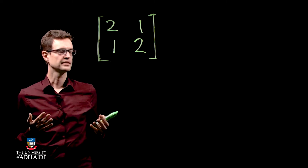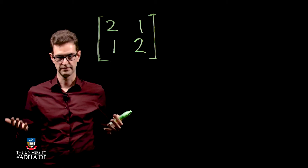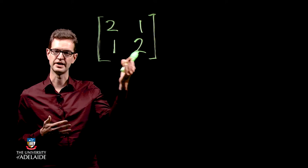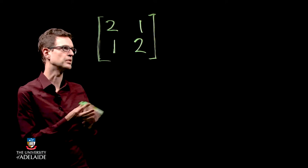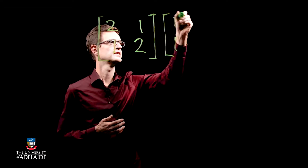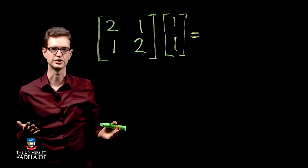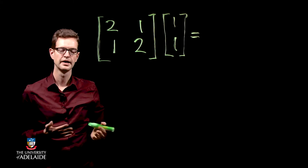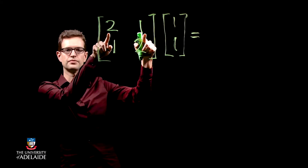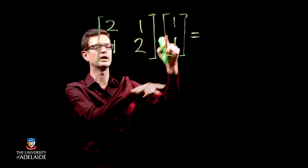The thing about eigenvalues and eigenvectors is they involve values and vectors, so we need to know what happens when we take this matrix and multiply it by a vector. To get the first row of the resulting vector, you take the top row of the matrix and multiply it by this vector here.